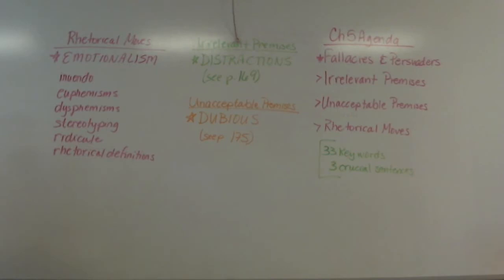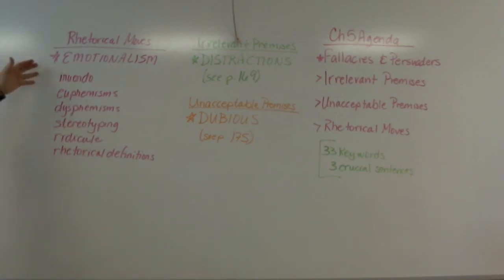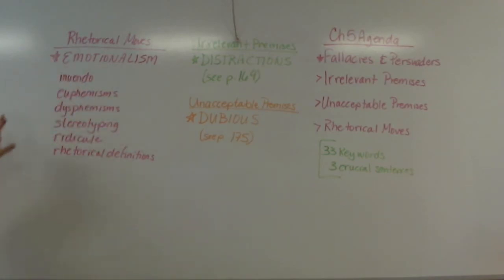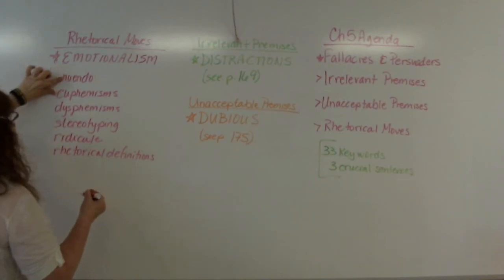The last piece of this chapter is the idea of persuaders — and not persuaders for a good cause, not logical persuaders. These are rhetorically emotional persuaders. So we have distractions, we have dubious premises, and now we have emotionalism. There are a few things here. Innuendo is saying one thing but implying something else — and usually that something else is very negative.